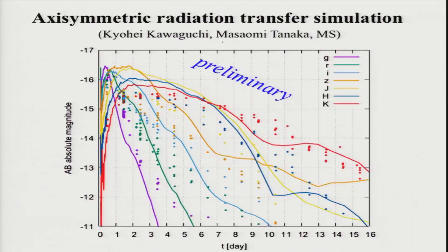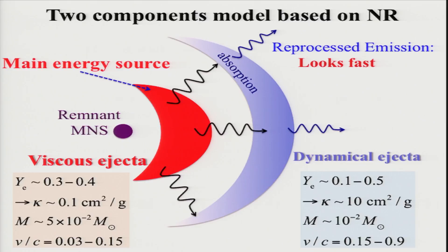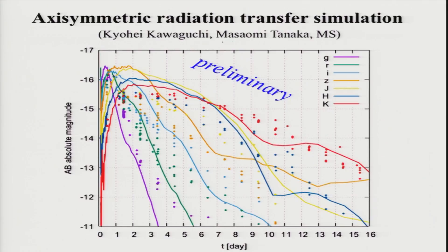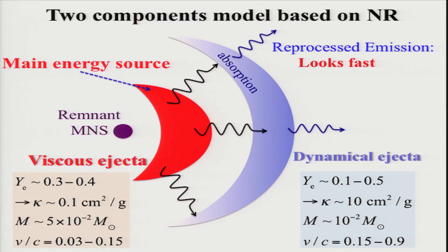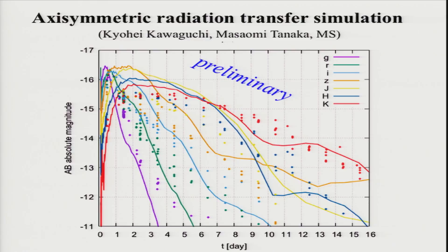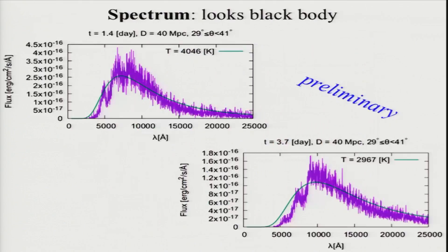Motivated by this consideration, we performed a radiation hydrodynamics calculation for the ejecta. We employ the configuration numbers as input, and this is the result. With a very rough parametrization, the observational results for the electromagnetic counterpart are fairly well reproduced. This is the spectrum — it looks almost like a blackbody, which agrees with the observational result. In addition, this is the apparent velocity at one day — about 40% of the speed of light. This means it is not very difficult to reproduce the high-speed component if we take this relativistic tail into account seriously.